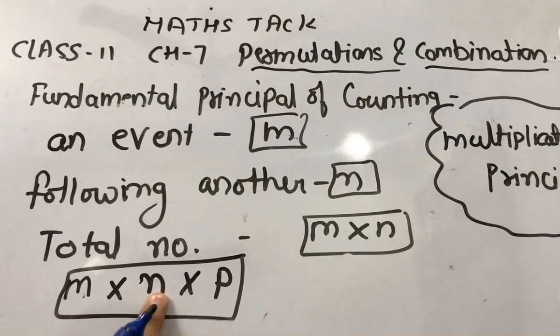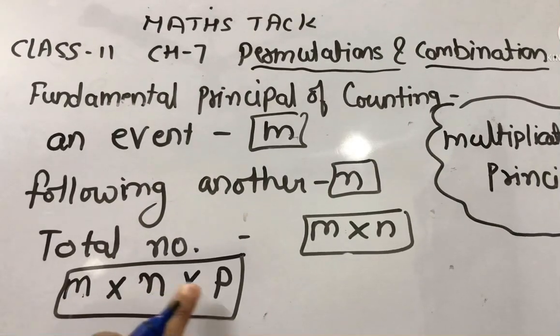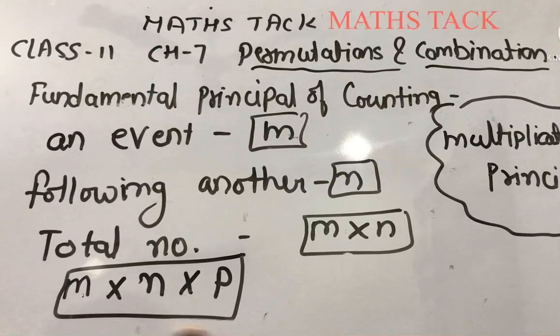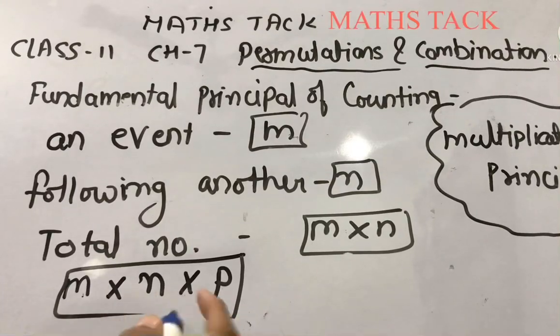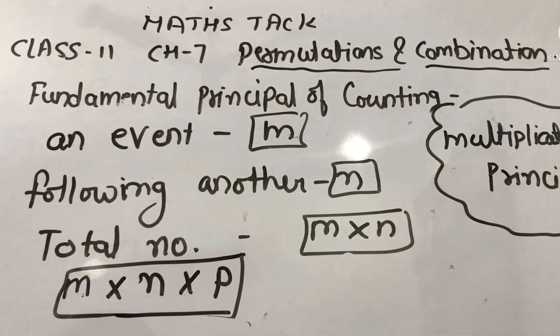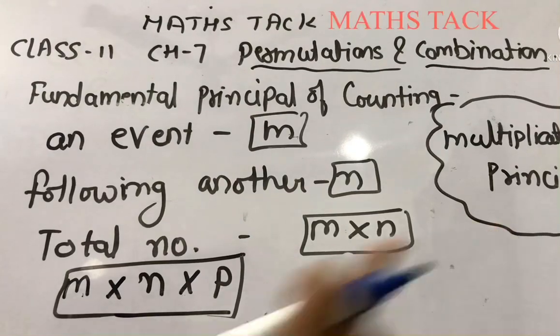if an event can occur in m different ways, another event in n ways, and a third event in p different ways, then the total number of ways will be m×n×p. This is called the fundamental principle of counting or simply the multiplication principle.